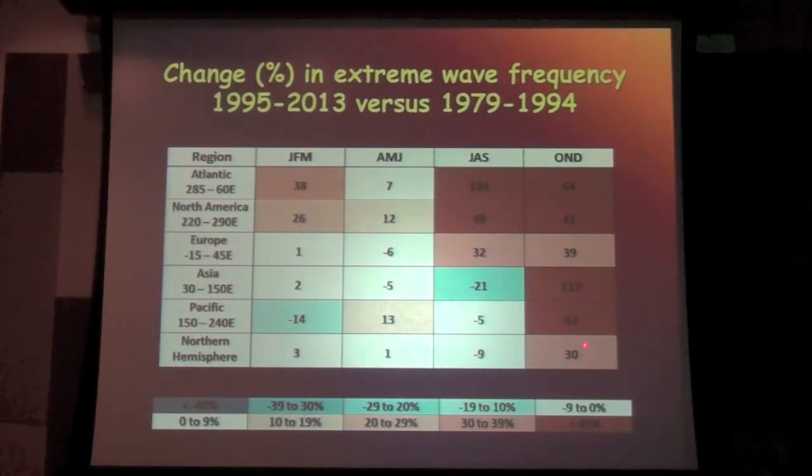So these numbers are big, especially in the fall. These are percent changes. So in the Atlantic and North America, for example, we're seeing like 50% increase in the frequency of these very wavy patterns. So it looks like the fall is really important. The summer, we're also seeing big increases. And the increases are largest in the Atlantic and North America.